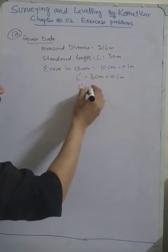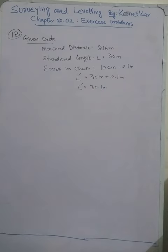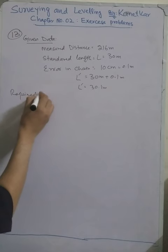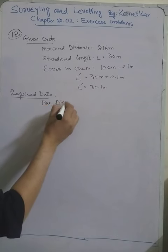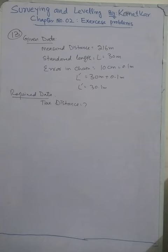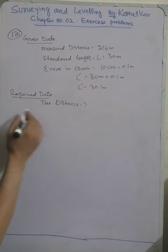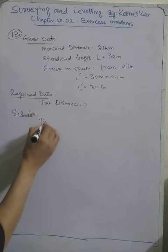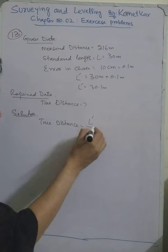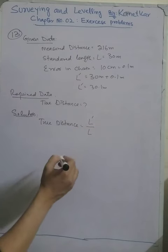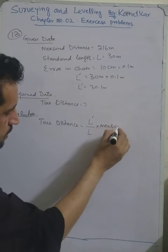So during the measurement, the length of the chain was 30.1 meters. Now we have to find out the true distance, because the distance measured with the chain was based on a chain that was not exactly 30 meters. The formula is: true distance equals the length of the chain during measurement divided by the standard length of the chain, multiplied by the measured distance.